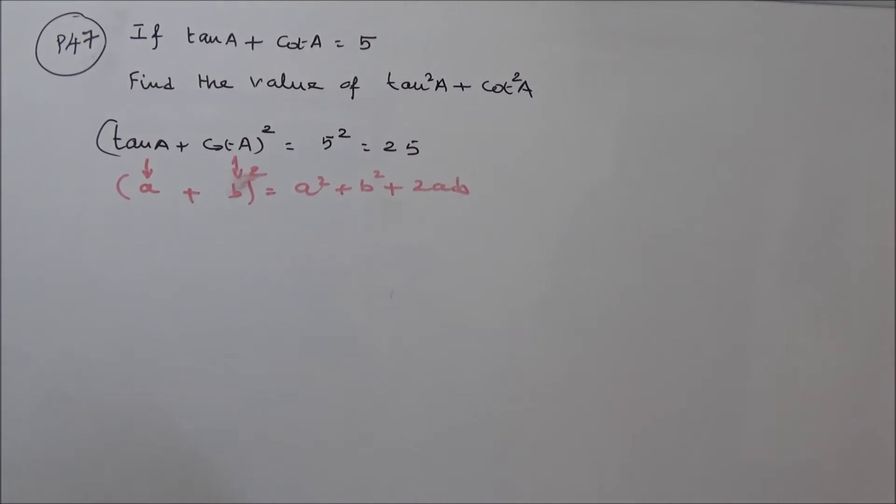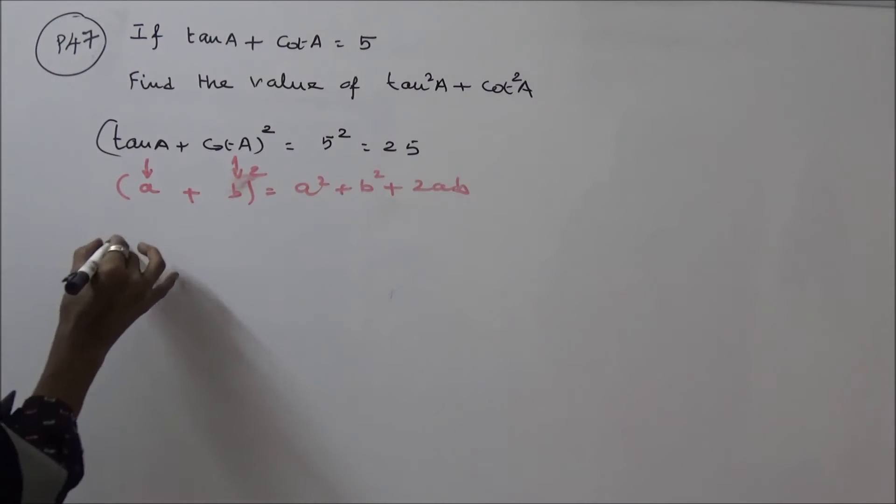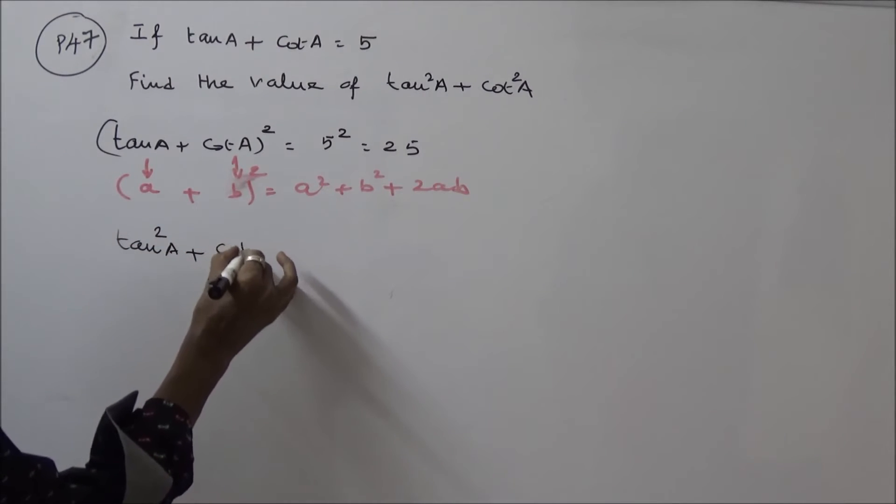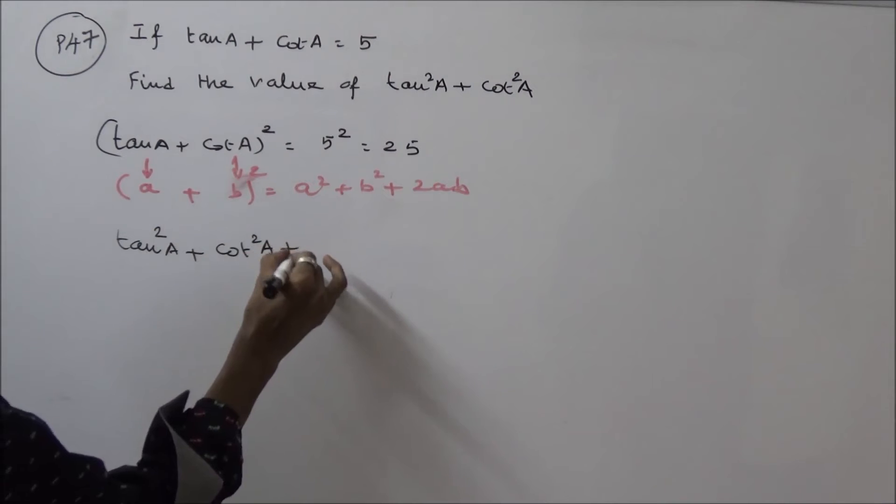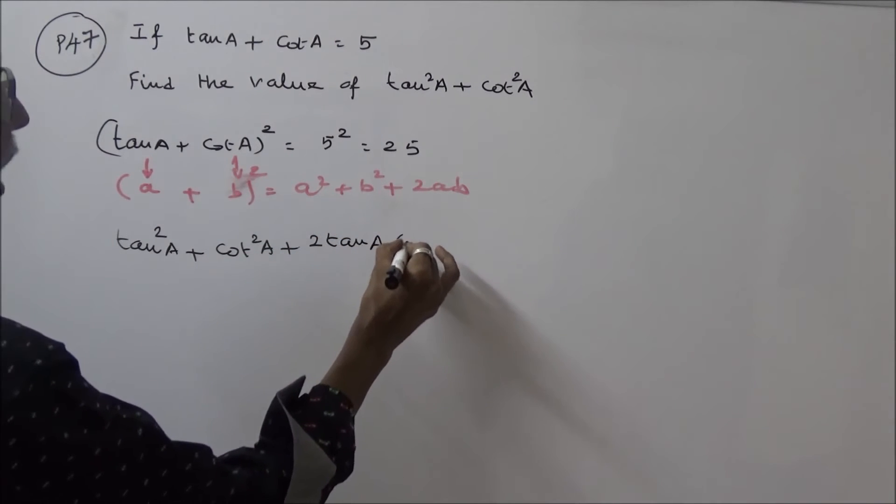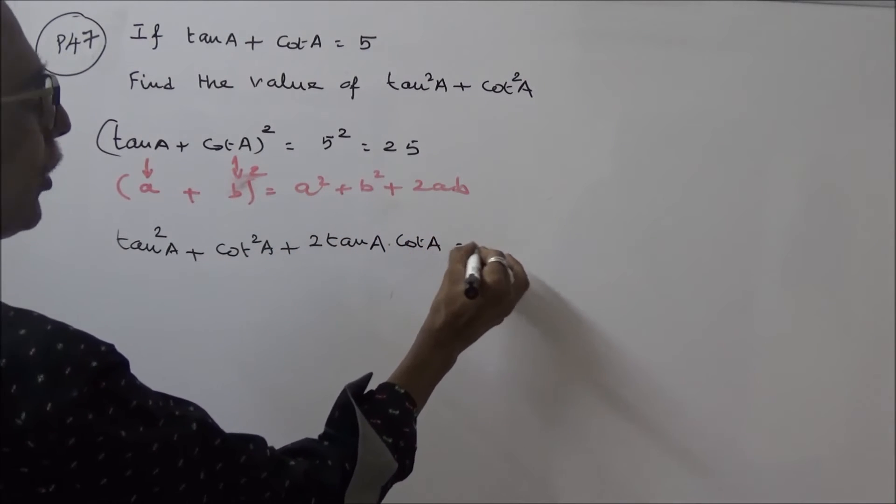Okay, then I will write the equation. This is tan square A plus cot square A plus 2 tan A into cot A is equal to 25.